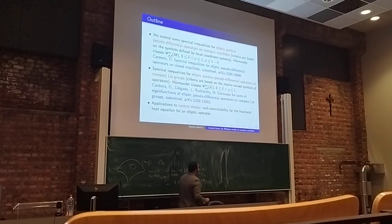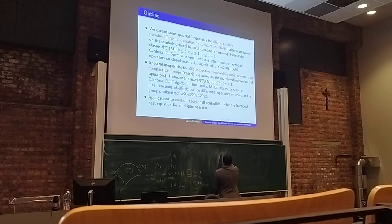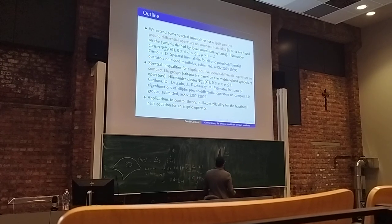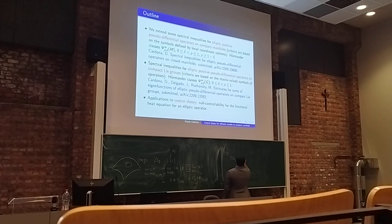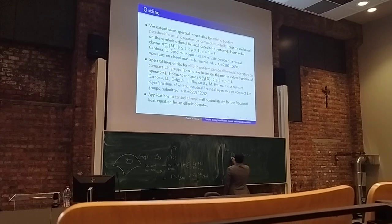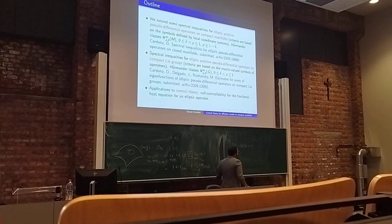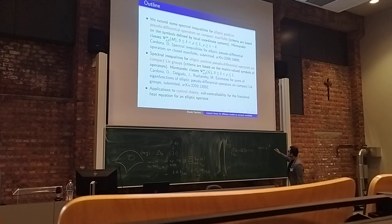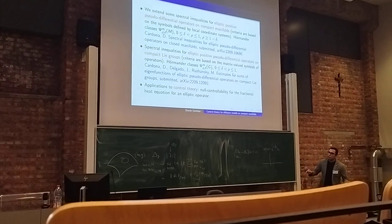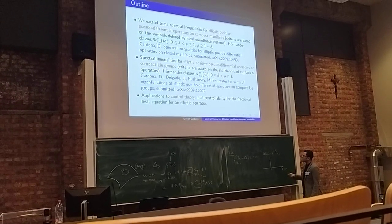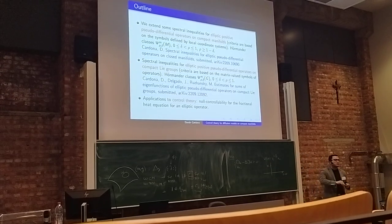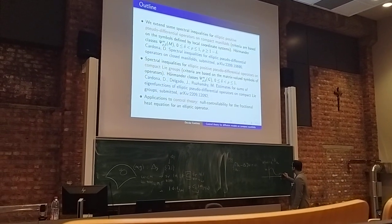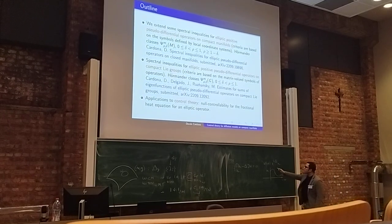Why is this important? If you are a PDE person and you want to work with the controllability of a diffusion model, that is your heat equation with an initial condition, we know we can write the solution to the heat equation in terms of the semigroup. When time goes to infinity, the solution goes to zero because of the dissipative properties of the semigroup.